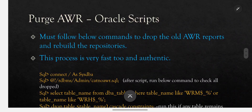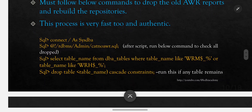Oracle provides scripts to clean automatically — follow the below commands to drop old AWR reports and rebuild the repositories. This process is very fast and authentic because it is provided by Oracle. Connect to Oracle database; it is better if you navigate to the rdbms/admin folder first, or if you are in Oracle home, connect and then type: @$ORACLE_HOME/rdbms/admin/catnoawr.sql